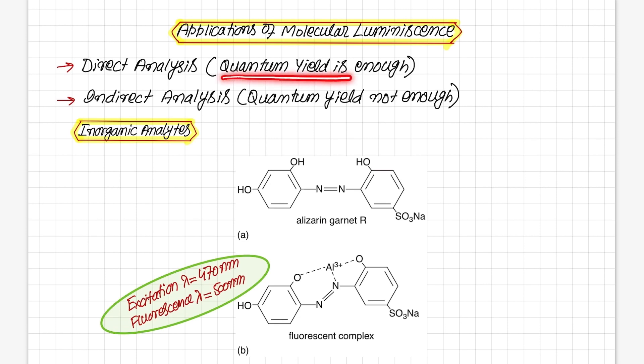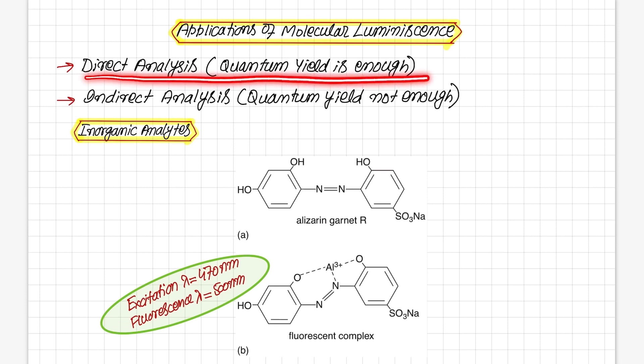In direct analysis, that particular molecule must have enough quantum yield so that fluorescence or phosphorescence can be measured by an instrument. However, processes like vibrational relaxation, internal conversion, external conversion, and inter-system crossing reduce the quantum yield.